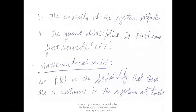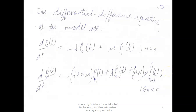Before making a mathematical model we need to define the probability. Let p(n,t) be the probability that there are n customers in the system at time t. The differential-difference equations of the model are: d/dt p_0(t) equals minus lambda*p_0(t) plus mu*p_1(t), when n equals 0, that is when the system is empty. This equation gives the rate at which p_0(t) is achieved.